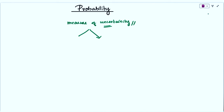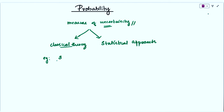There are two types of probability in mathematics. One is classical theory and another one is statistical approach. In general, to obtain the probability of an event, we find the ratio of number of outcomes favorable to the event to the total number of equally likely outcomes. For example, in classical theory, if we roll a die, the probability of an even number should be 3 by 6, which is equal to 1 by 2. This is the method in classical theory of probability.